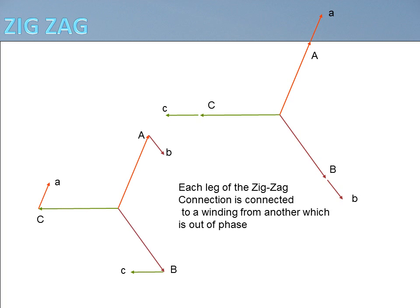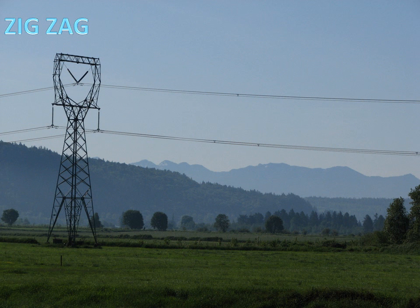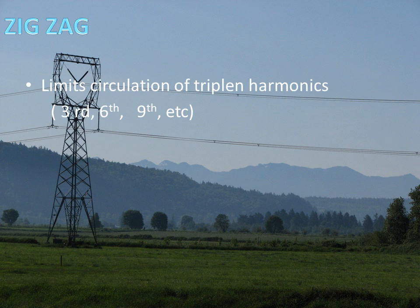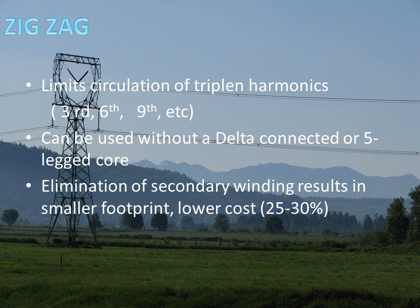The resulting zigzag connection is phase-shifted with respect to the incoming three-phase source. This phase shift has the benefit of limiting the circulation of tripline harmonics — thirds, sixths, and ninths. Also, it can be used without a delta-connected tertiary winding or a 5-legged core, normally associated with core saturation caused by harmonic circulation. The elimination of secondary windings also results in a smaller footprint and typically a lower cost.